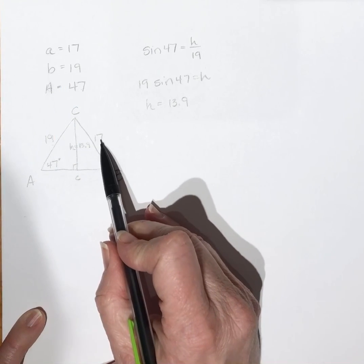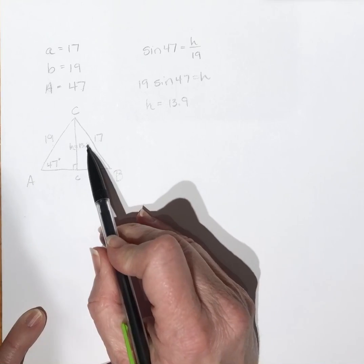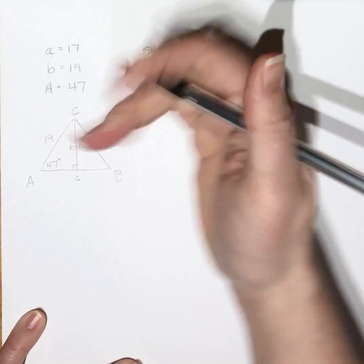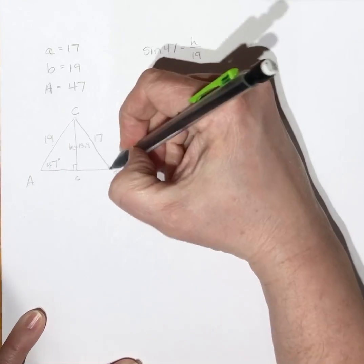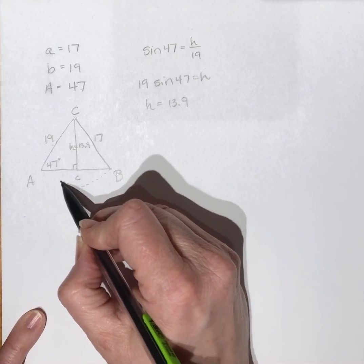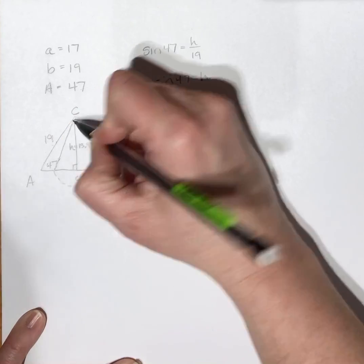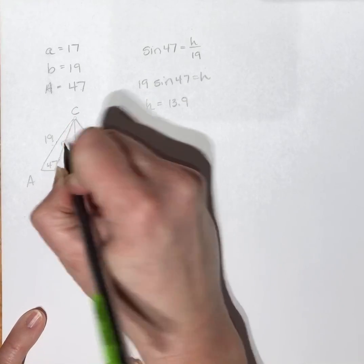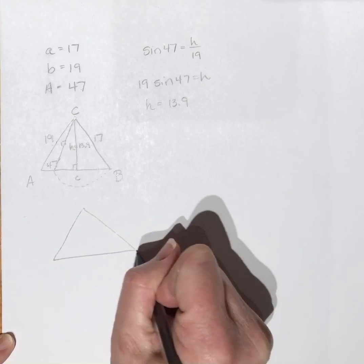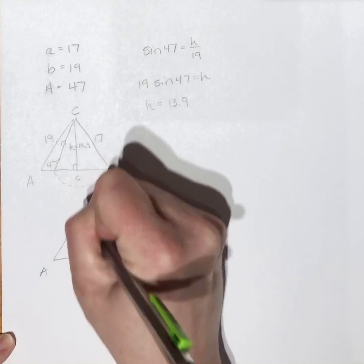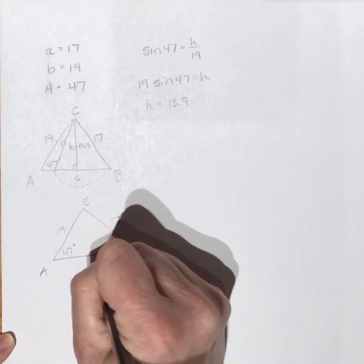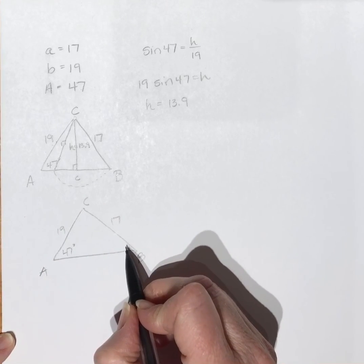If the side opposite is bigger than your height, think of this: if this was on a hinge, okay, this is 17, this is still smaller than this, so I could swing this over here and I could have two potential triangles. I'm going to have a triangle that looks like this. This is A, B, C. This will be 19, 17, 47 degrees, and this is going to be some acute angle.